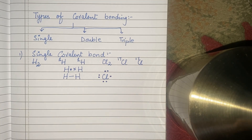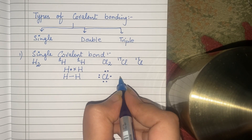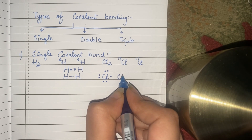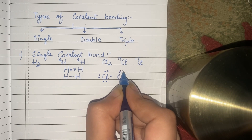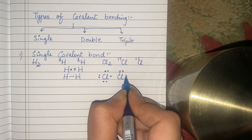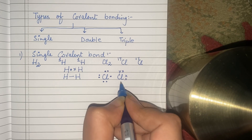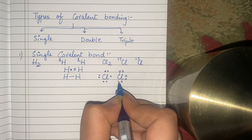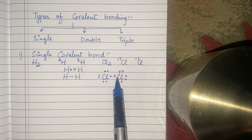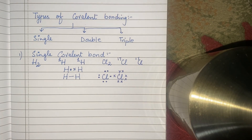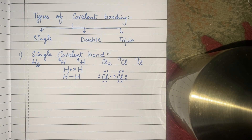ये एक chlorine के सात electrons हैं. अब दूसरे chlorine के electrons बना लेते हैं — उसके भी सात electrons. तो दर्मियान वाले जो दो electrons हैं, these electrons are shared by both of the chlorines.